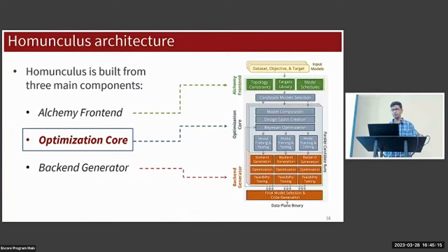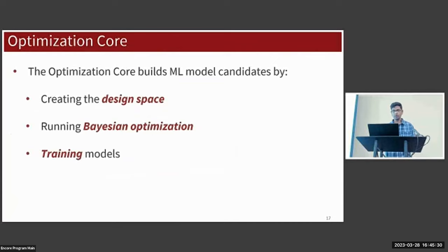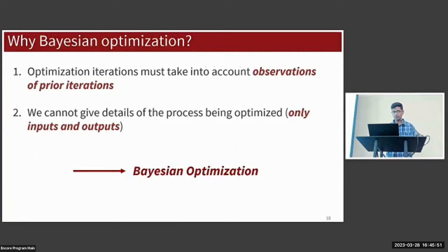Next we'll start discussing how exactly Homunculus actually produces these data plane ML models. This is done primarily through the second component of Homunculus which is called the optimization core. The optimization core takes the directives that the user has specified through the Alchemy front-end and it creates ML models to test in the data plane. The optimization core is going to create a design space and then run a Bayesian optimization process within that design space to produce new candidate ML models to train.